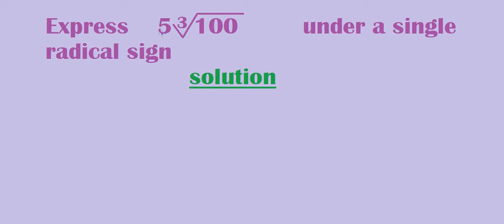Cube root means three things multiplied together which are the same. So here we have 5 times the cube root of 100. We are going to take this 5 back inside where it was.